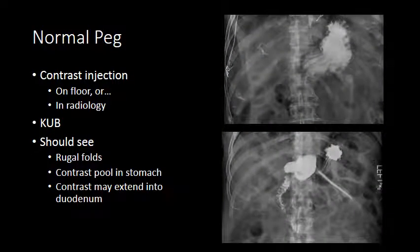Here are two examples of normal percutaneous gastrostomy catheters after contrast injection. We can see a normal rugal fold pattern within the stomach, pooling of contrast within the fundus, and in the lower example contrast extending into the duodenum. While this gives confidence that the gastrostomy catheter is in the right position, sometimes malpositioned gastrostomy catheters can still fill the stomach due to a mature track when the catheter is in the track but does not extend all the way into the stomach itself.